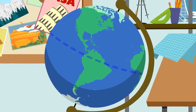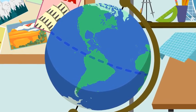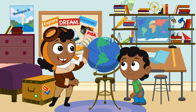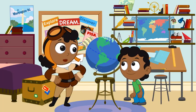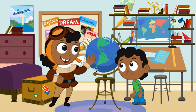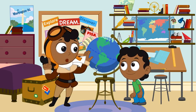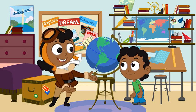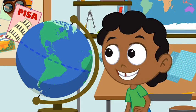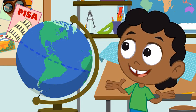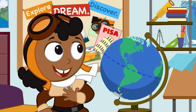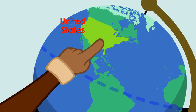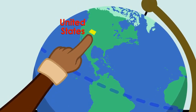This globe is just a model of the Earth. It shows all of the continents and oceans of the world. This globe also shows the different countries where people live. Where are we? We live in the United States of America, in the state of Colorado.